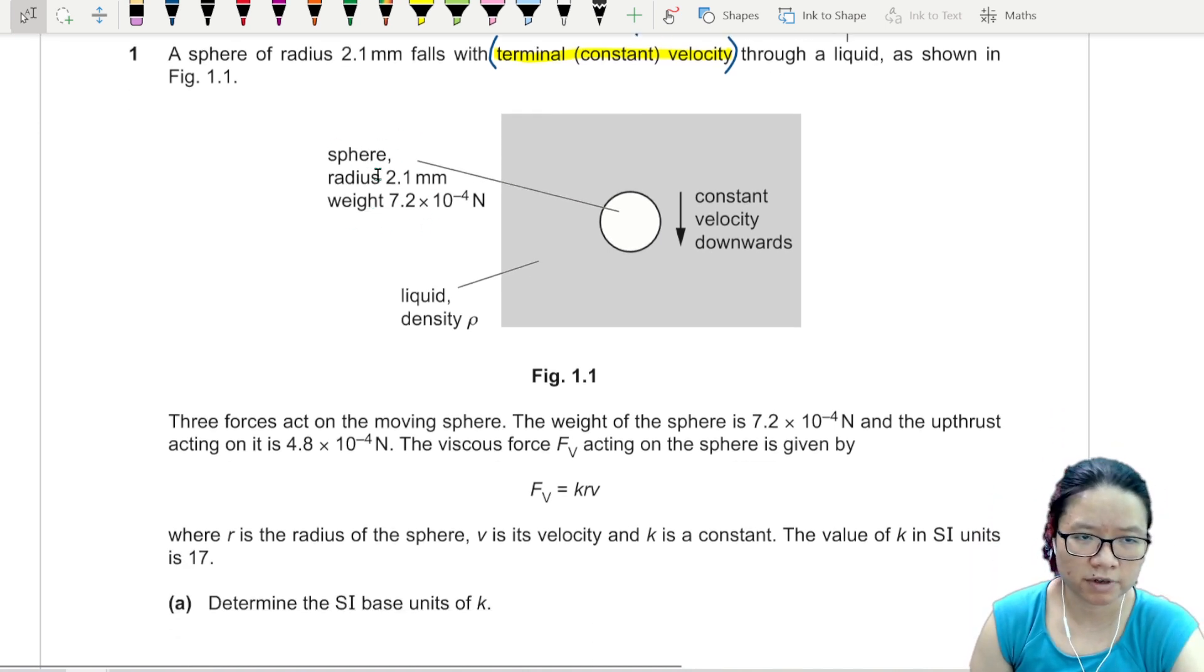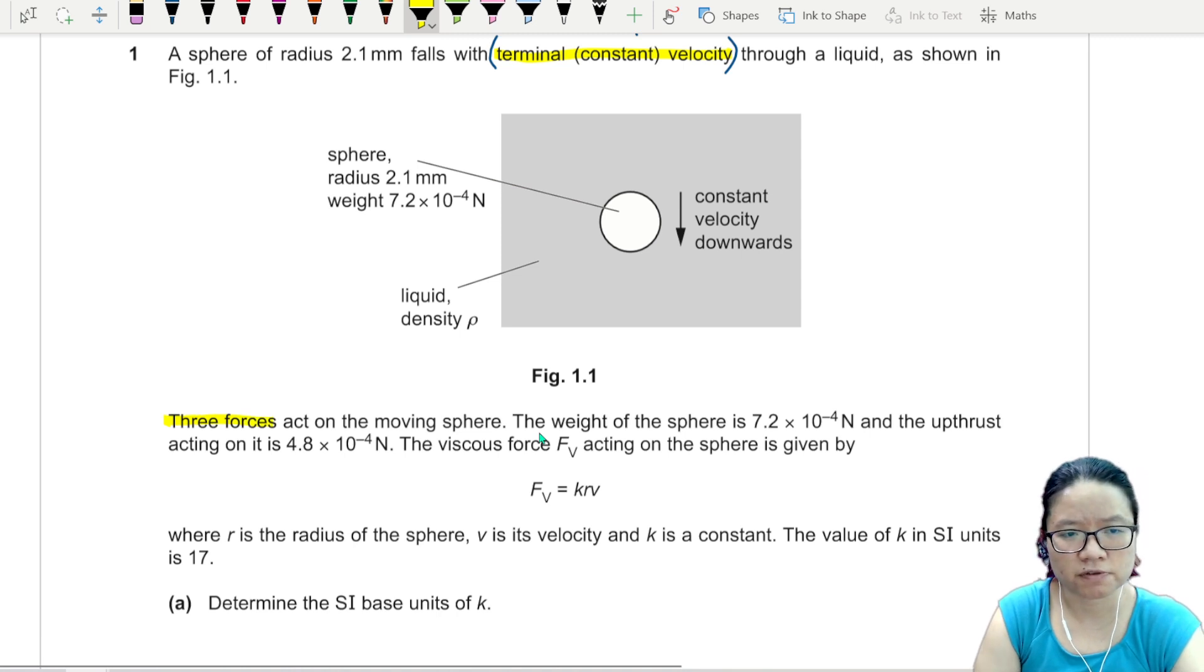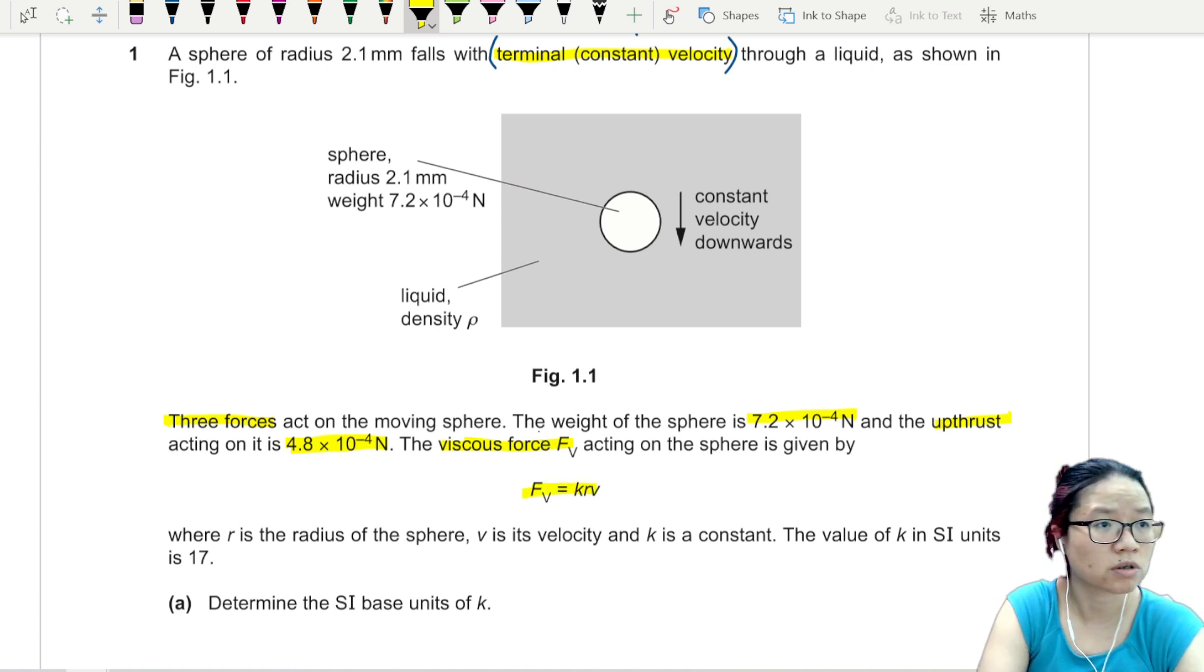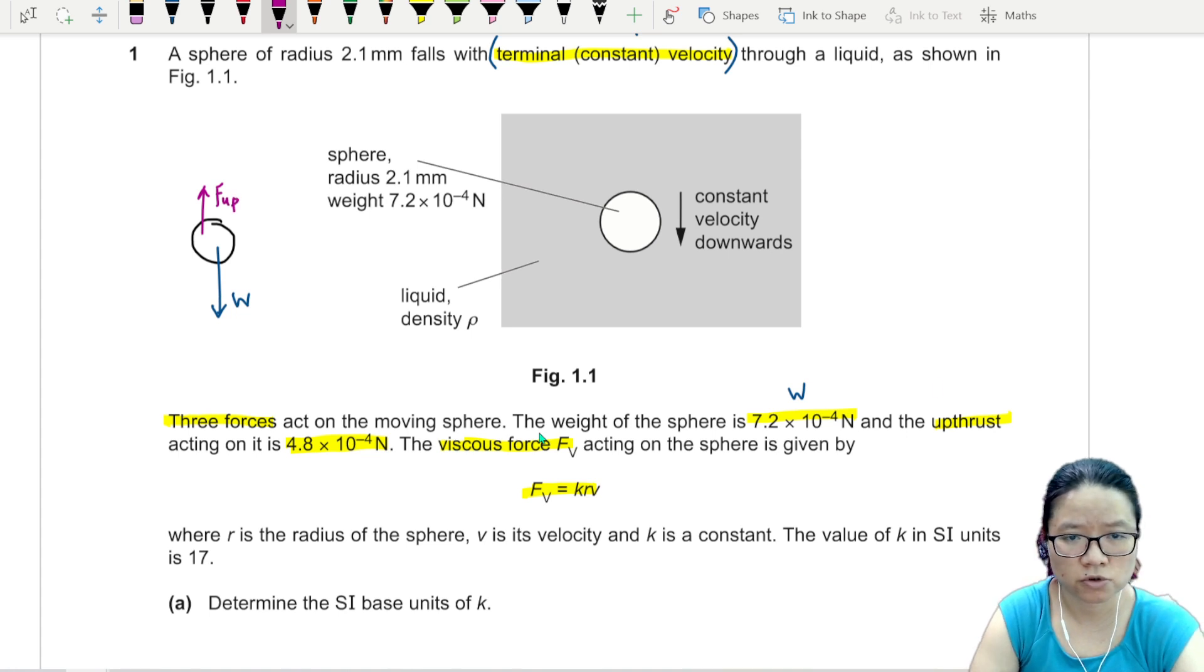The sphere is already at terminal velocity. Whenever there's constant velocity, we know that acceleration is zero, so the net or resultant force is zero. The question states there are three forces acting on the moving sphere. The weight of the sphere is 7.2 times 10 to the power of negative 4 newton, the upthrust is 4.8 times 10 to the power of negative 4, and the viscous force acting on the sphere is given by this equation.